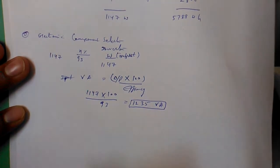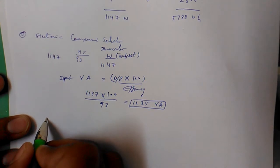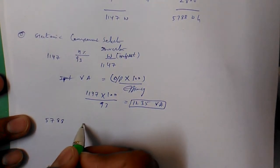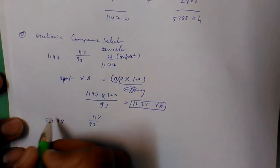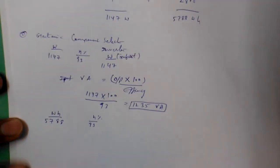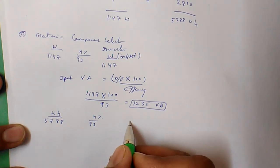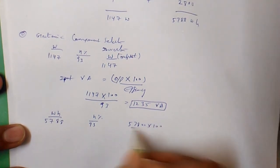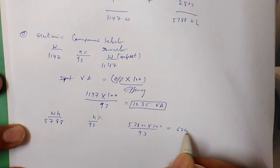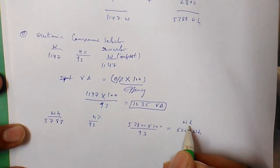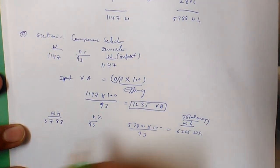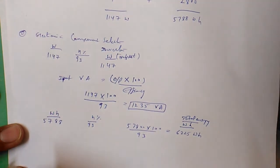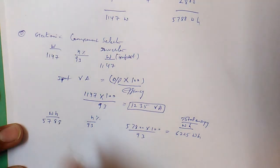Total energy is 5788 watt-hours and inverter efficiency is 93%. So energy input = 5788 × 100 / 93 = 6225 watt-hours. This gives us the corrected total energy accounting for inverter losses.